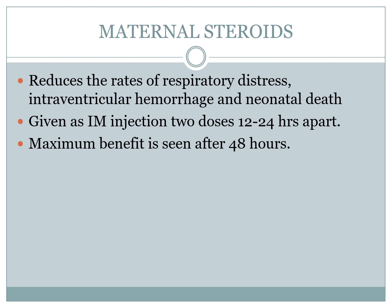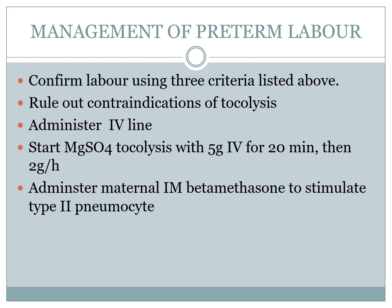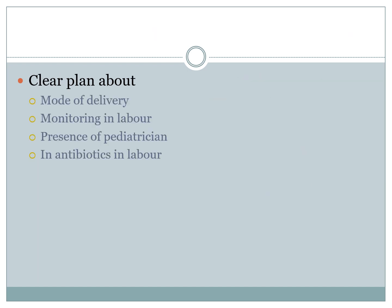Steroids reduce the rates of respiratory distress, intraventricular hemorrhage, and neonatal death. They are given as an IM injection in 2 doses, 12 to 24 hours apart, with maximum benefit seen after 48 hours. Dexamethasone or betamethasone is given to promote lung maturity. To manage preterm labor, confirm labor using the three criteria, rule out contraindications to tocolytics, administer IV line, start magnesium sulfate tocolysis, and administer maternal betamethasone to stimulate type 2 pneumocytes. There must be a clear plan about mode of delivery, monitoring, presence of a pediatrician during delivery, and use of antibiotics in labor.